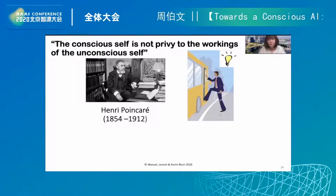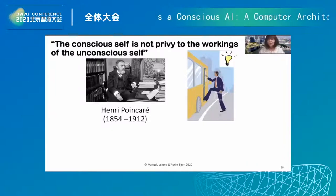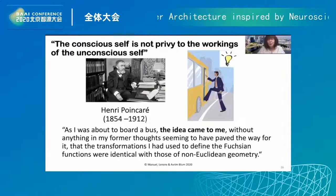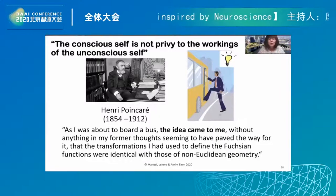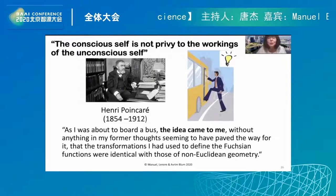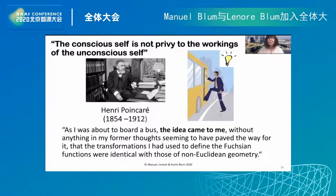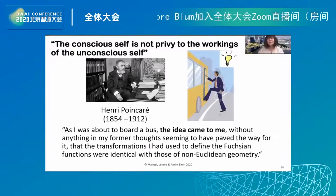Here's a famous example from mathematics. Henri Poincaré was working very hard on difficult mathematics and not getting anywhere. Then he had the opportunity to go on a trip. As he was about to board a bus, the idea came to him without anything in his former thoughts seeming to have paved the way: the transformations he had used to define the Fuchsian functions were identical with those of non-Euclidean geometry — two areas of mathematics he knew well but had never seen as isomorphic suddenly connected.